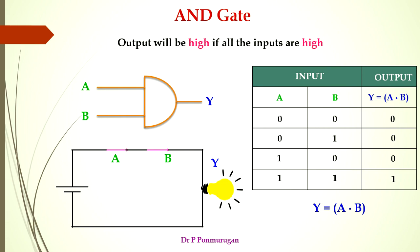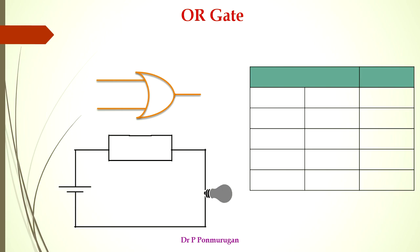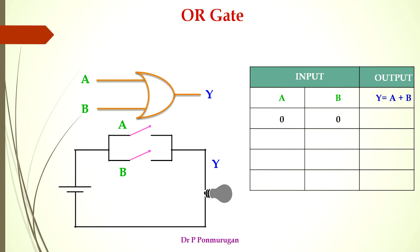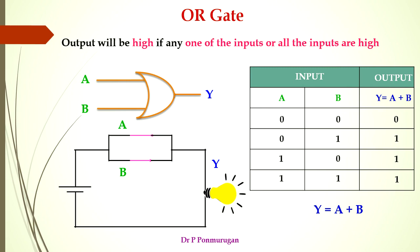The next is the OR gate. This is the symbol, and we proceed with the truth table and circuit with inputs A and B and output Y. If both inputs are 0, both switches are open, and the output will be 0. If one switch is closed the output will be 1. If A equal to 1 and B equal to 0, the output will be 1. If both inputs are 1, the output will be 1. The equation is Y = A + B. The OR gate: the output will be high if any one or all of the inputs are high.